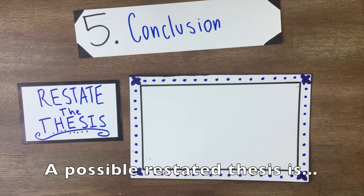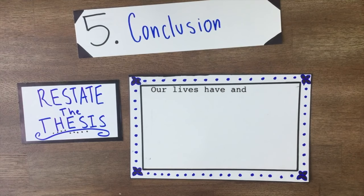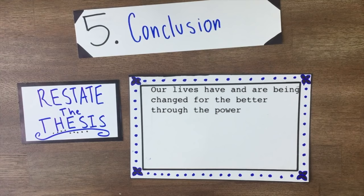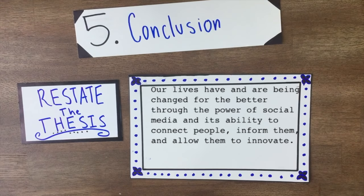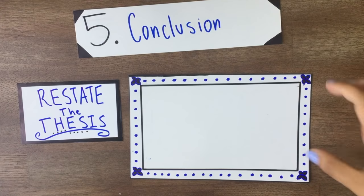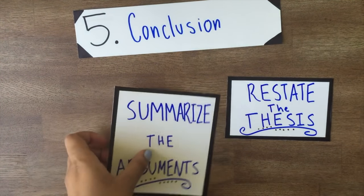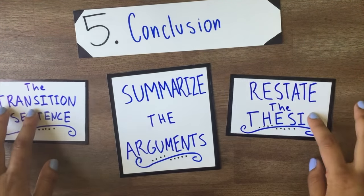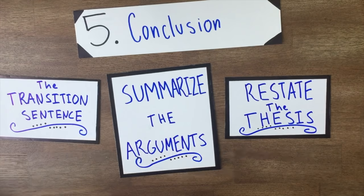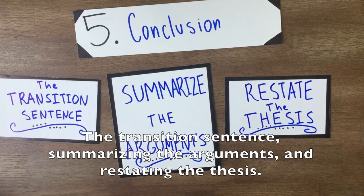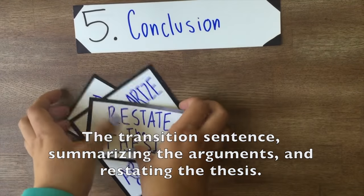A possible restated thesis is: our lives have and are being changed for the better through the power of social media and its ability to connect people, inform them, and allow them to innovate. And those are the three parts of our conclusion: the transition sentence, summarizing the arguments, and restating the thesis.